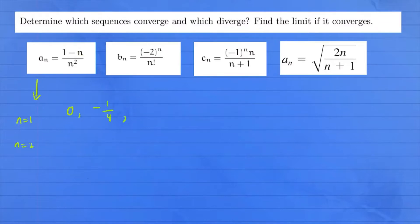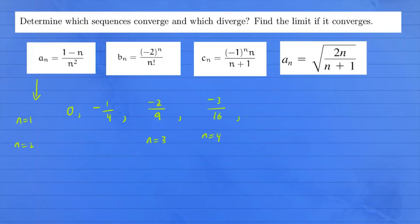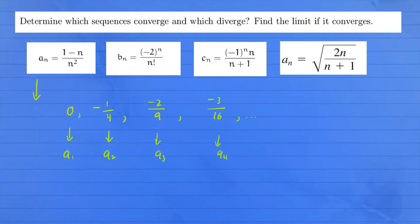When n equals three, you have one minus three, that's negative two over three squared, which is nine. When n equals four, you have one minus four, that's negative three over four squared, which is 16. So the list just continues. This is our first term a_1, second term a_2, then a_3, a_4, and so on.